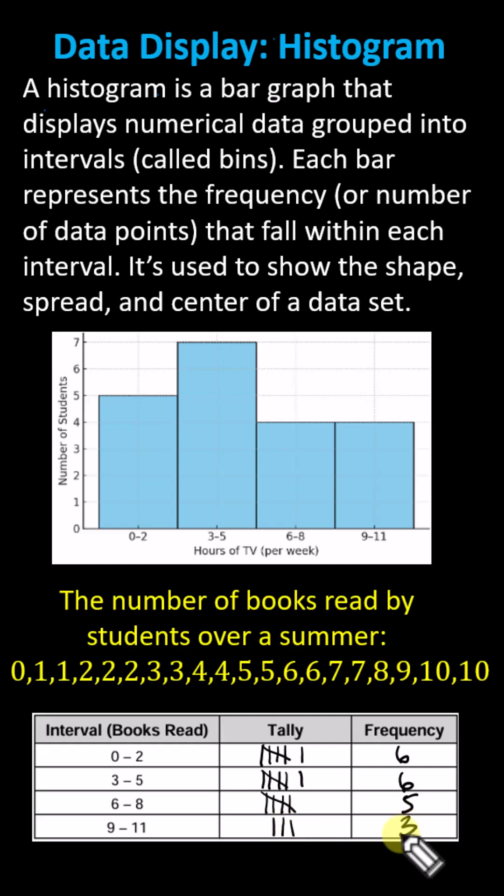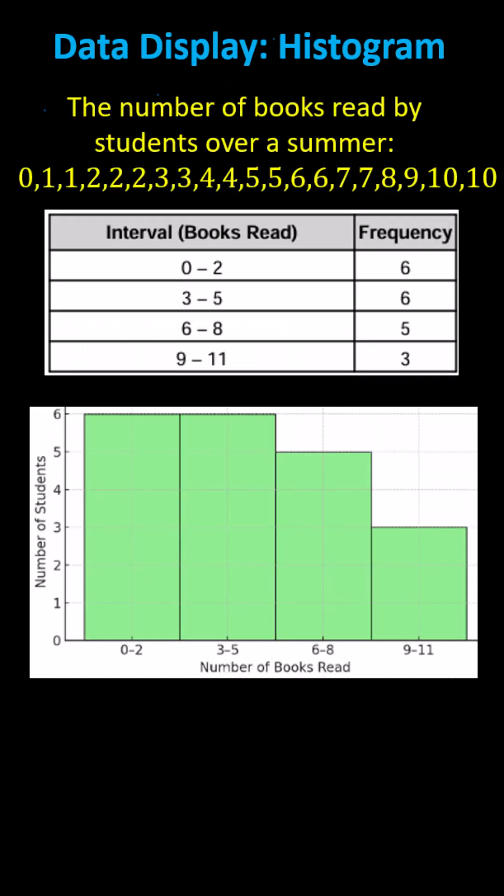And now we create the histogram from this completed frequency table. For the first step, we set up the horizontal axis, which will contain the intervals or bins. And then we set up the vertical axis with the frequency, which represents the number of students.